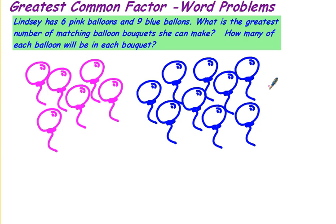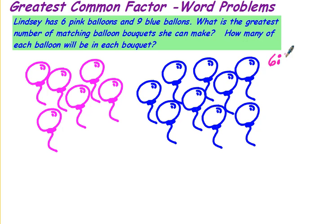The first thing you want to do is look at your balloons and think of what type of groups you can put those in. What you're really finding here is Greatest Common Factor. So let's think about it. The factors of six are one and six, two and three.